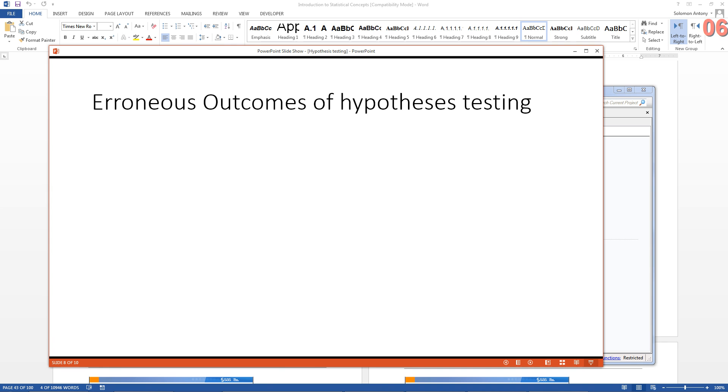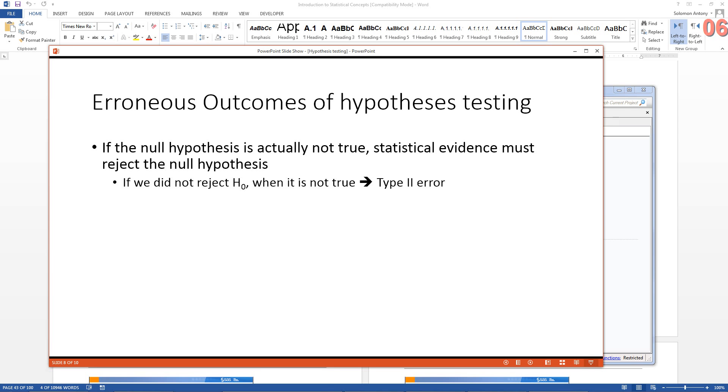Sometimes we have erroneous outcomes of hypothesis testing. You know, we fail to find the result correctly. So if the null hypothesis is actually not true, but of course evidence should be rejected. On the other hand, if we did not reject, then that will be called a type 2 error. That is the same as failing to find the accused to be guilty of a crime when he did actually commit the crime. So that is called type 2 error.